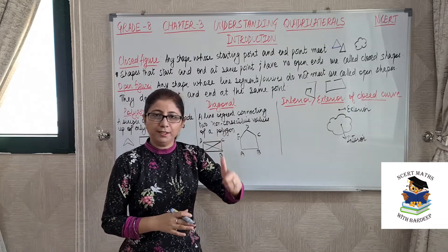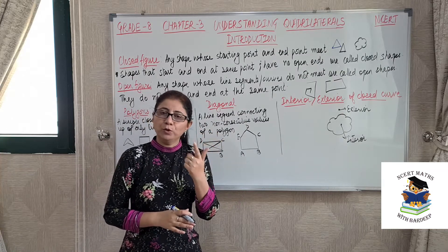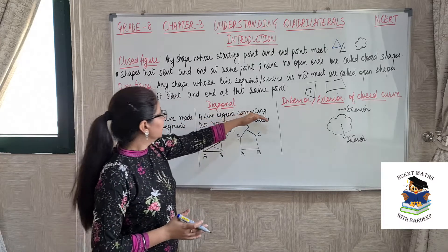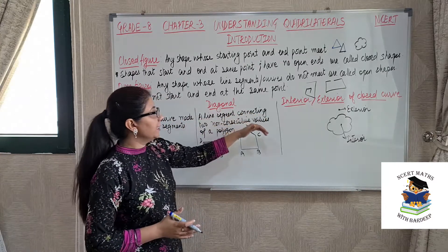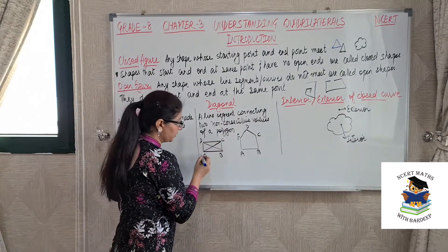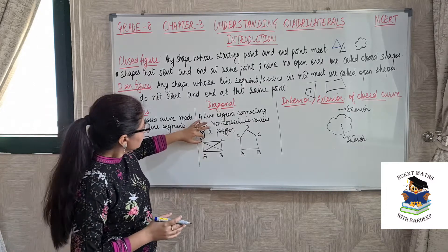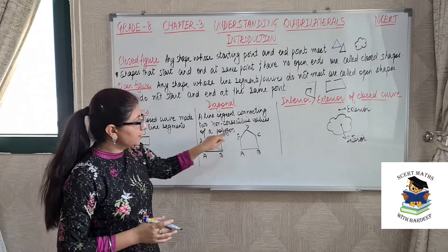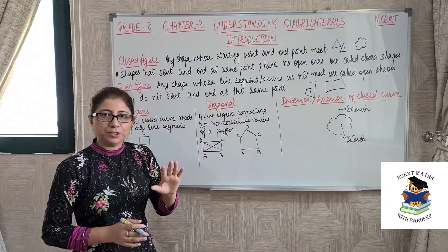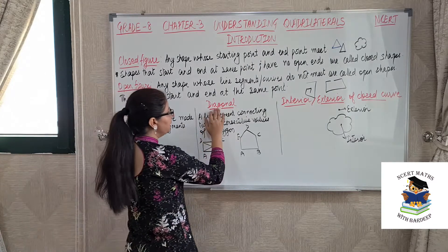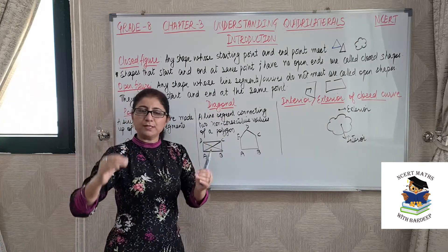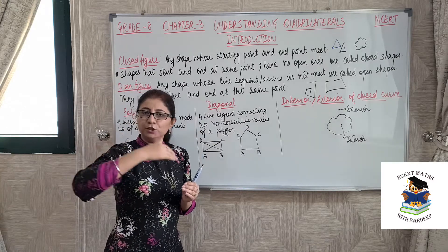That means now we will consider that the figure given is a polygon — its starting point and ending point will be same, and it is made up of only line segments. What are diagonals? A line segment connecting two non-consecutive vertices of a polygon. Vertices means these corners, and these line segments are called edges. So what is the diagonal? We will consider any point, skip the consecutive vertices, and join the remaining vertices.